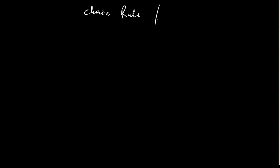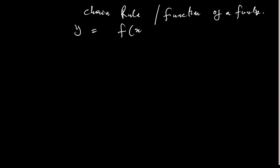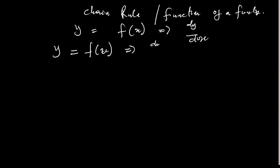One of the common principles you find in differentiation is what we call chain rule — the chain rule method of differentiation, or you call it function of a function. When we're differentiating and we have y as a function of x, that is y = f(x), when we differentiate we get dy/dx. Now if y is not just a function of x directly, but y is a function of u, on differentiating I'll come up with dy/du.